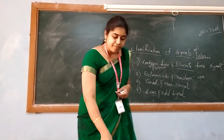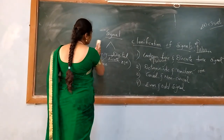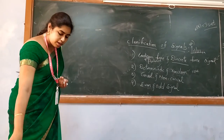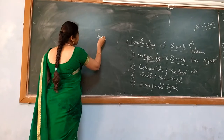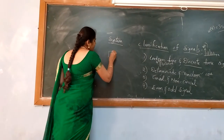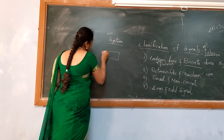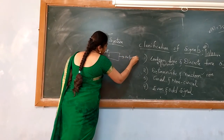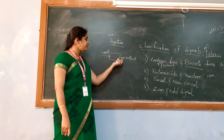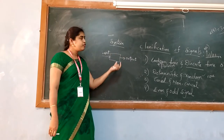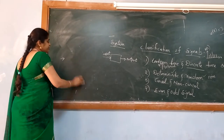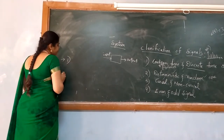Now let me explain about classification of systems. Before going into the classification of systems, let us learn what is meant by a system. A system is a device which will be having one input and one output. A device which, regarding its functionality, processes the input and generates the output — that is called a system. In signals and systems subject, we are having at most seven classification of systems.